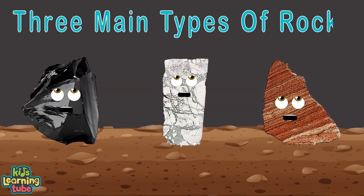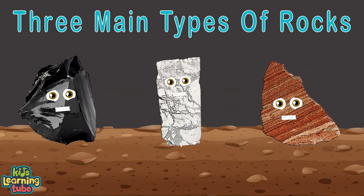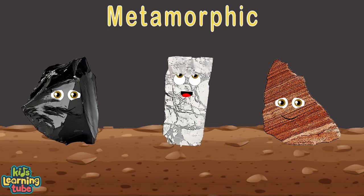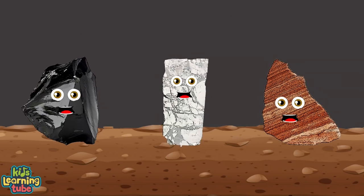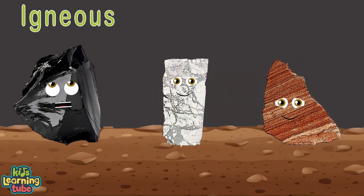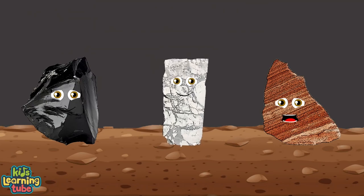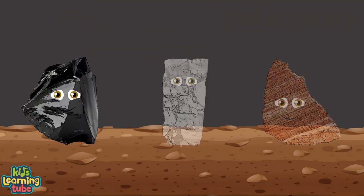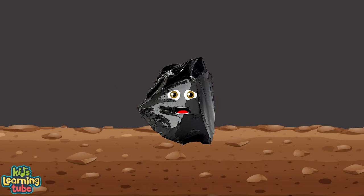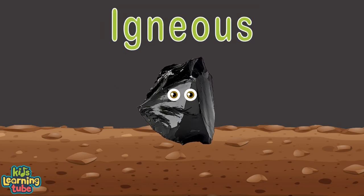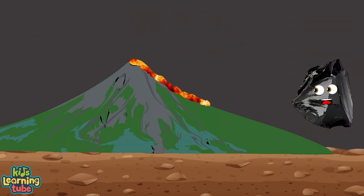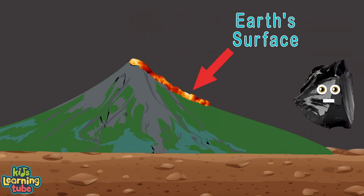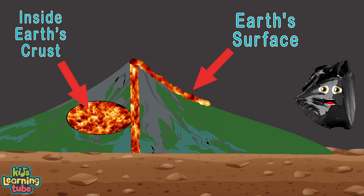There are three kinds of rocks on earth you will see: igneous, metamorphic and sedimentary. Our world is full of these rocks on land and in the sea. I am a main type of rock — my name is Igneous. I am the first main type of rock of the three. Igneous rocks form when volcanic magma cools, either at the earth's surface or inside earth's crust.